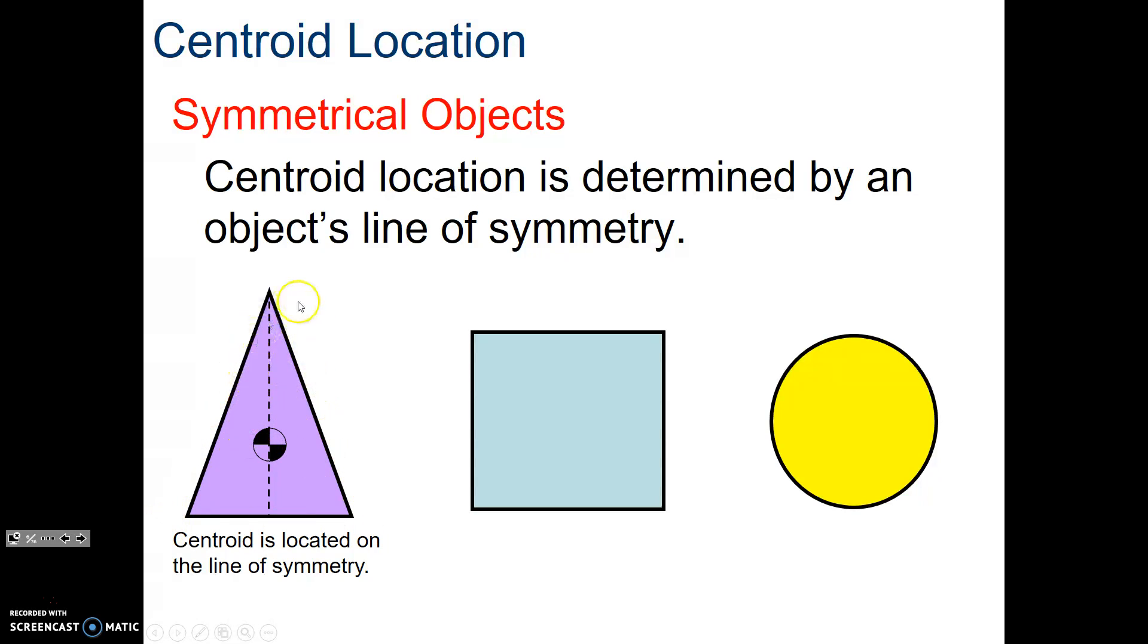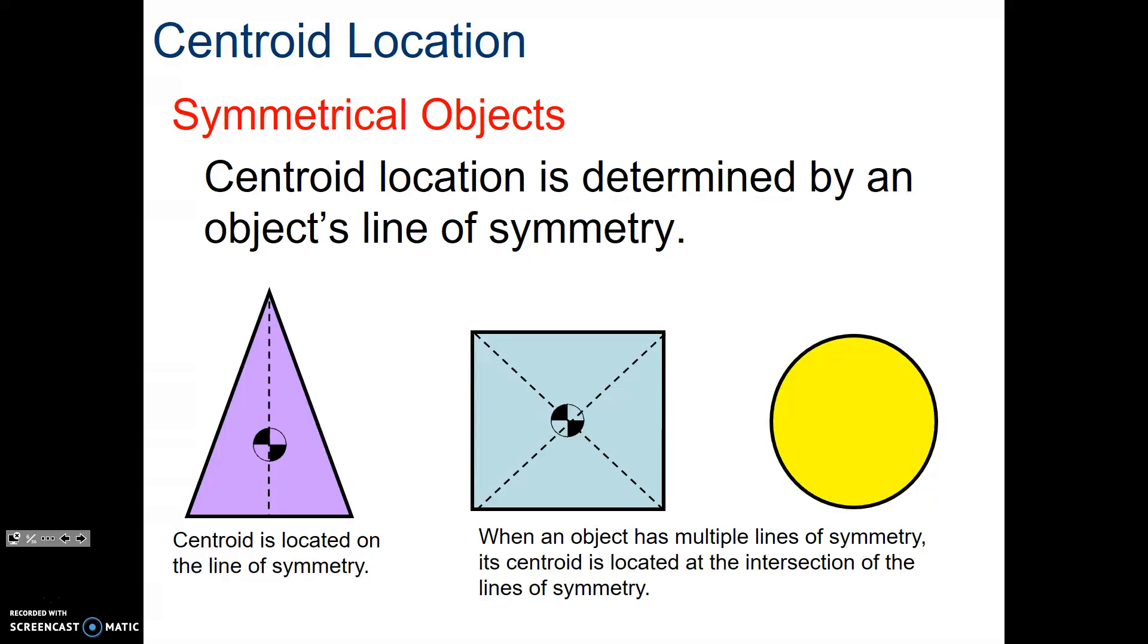Notice how there's more material down here than up here. You've got to find that happy middle where most of the material, this material on the bottom, has to equal the top material. Squares and circles have a really nice, easy geometry because it doesn't matter where that location is. You have that nice line of symmetry, and it's located right in the middle.